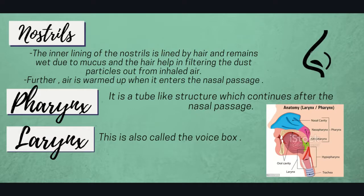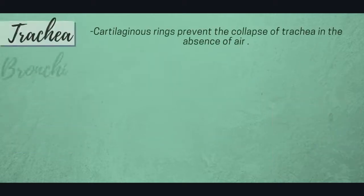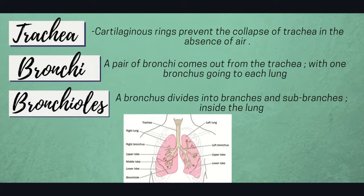Then comes the pharynx, which is a tube-like structure that continues after the nasal passage, followed by the larynx, which is called the voice box. Trachea is the medical name for the windpipe — it is the largest airway in the respiratory system. Cartilaginous rings are present in the trachea to prevent its collapse in the absence of air. A pair of bronchi comes out of the trachea, with one bronchus going to each lung.